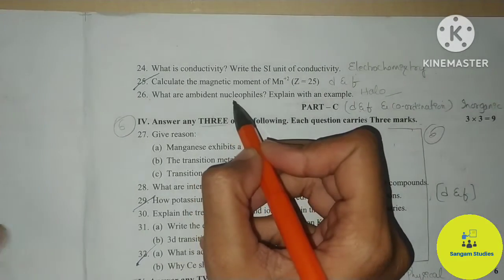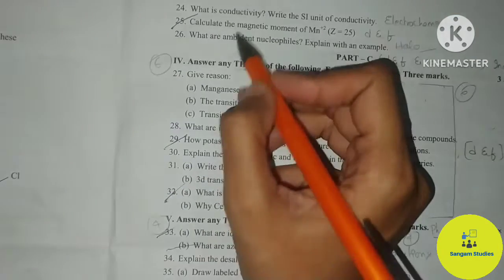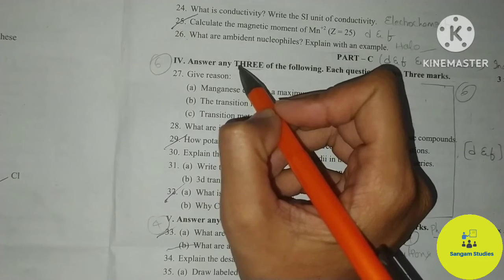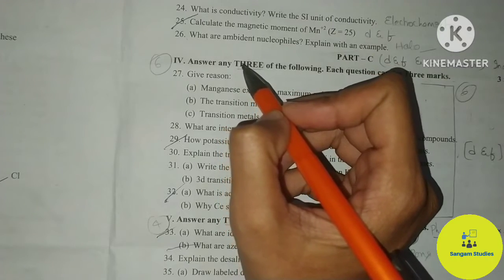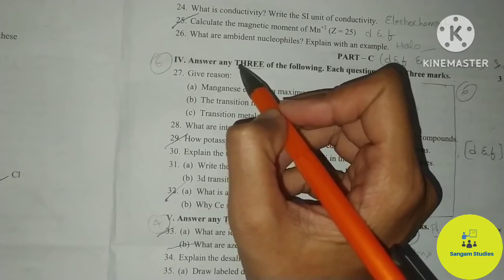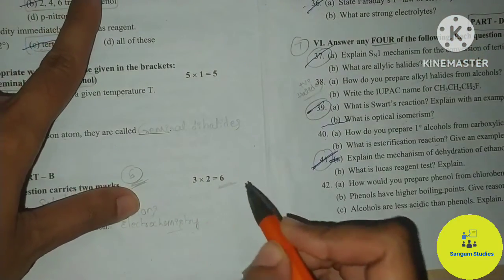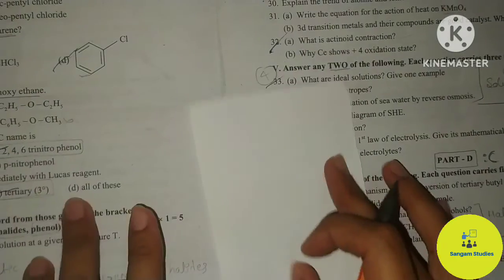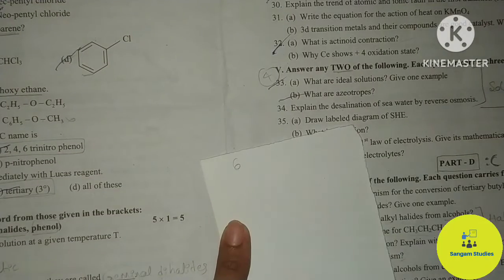If the amphidentate nucleophiles question is the tough one, you can still answer 5 questions directly. You need to answer only 3 questions, so in this section you will score 3 × 2 = 6 marks.